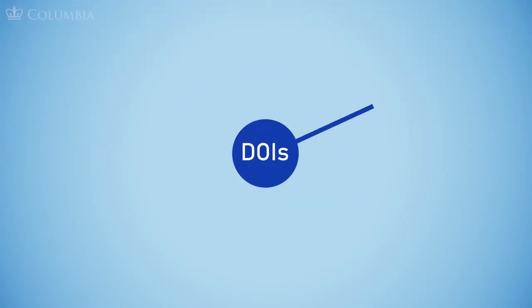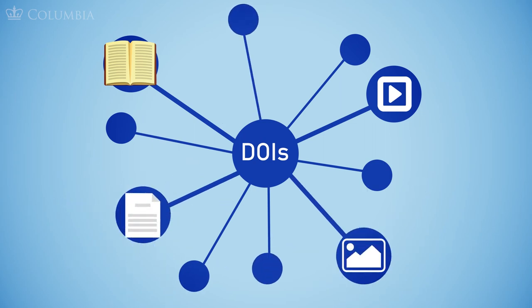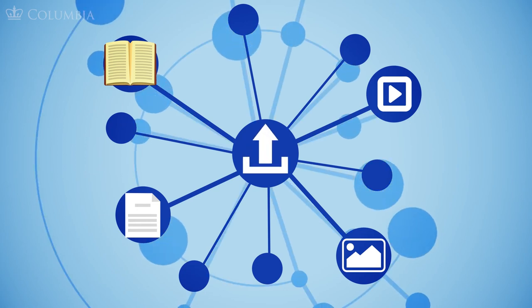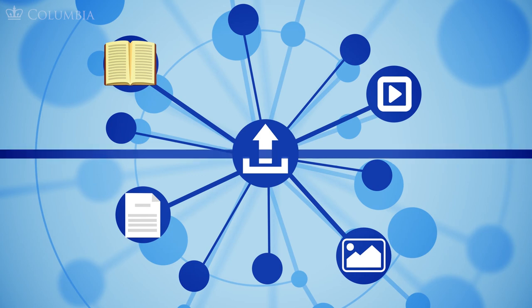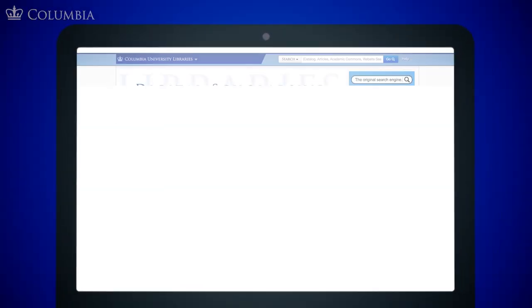One of the ways we do this is by giving every object in Academic Commons a Digital Object Identifier, or DOI — a unique code that links to your work's online location. DOIs are used by publishers and institutions all over the world and can be used in citations and portfolios to guide people to your research. While not all students are eligible to deposit to Academic Commons, all faculty members, departments, and institutes are encouraged to submit their work using our online self-deposit.